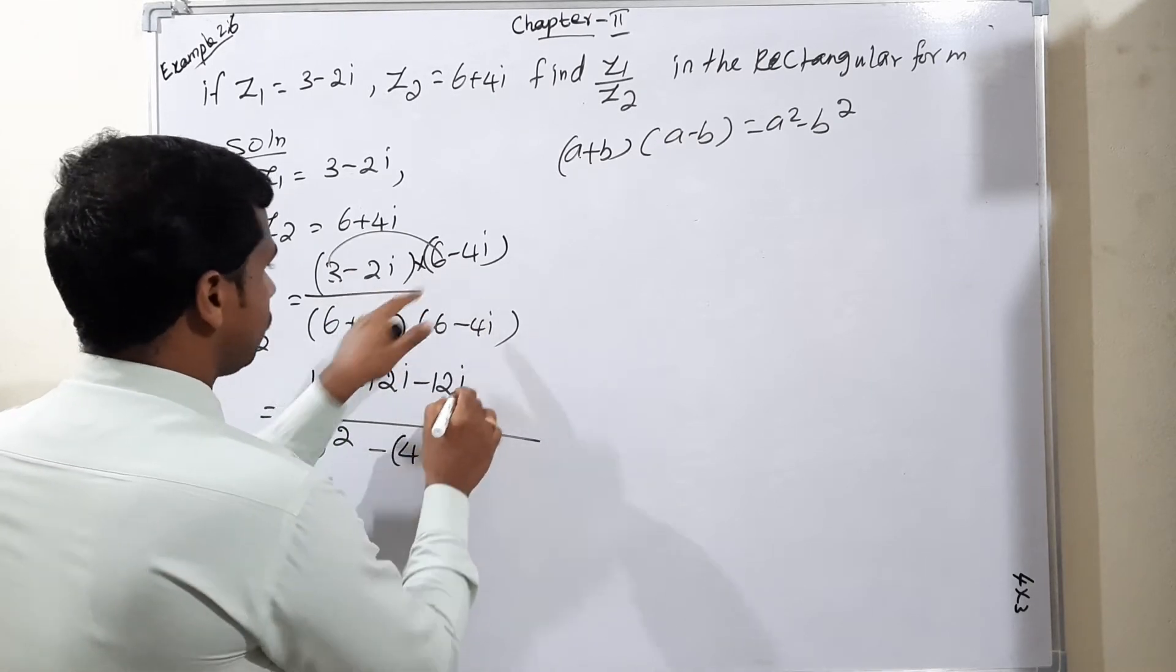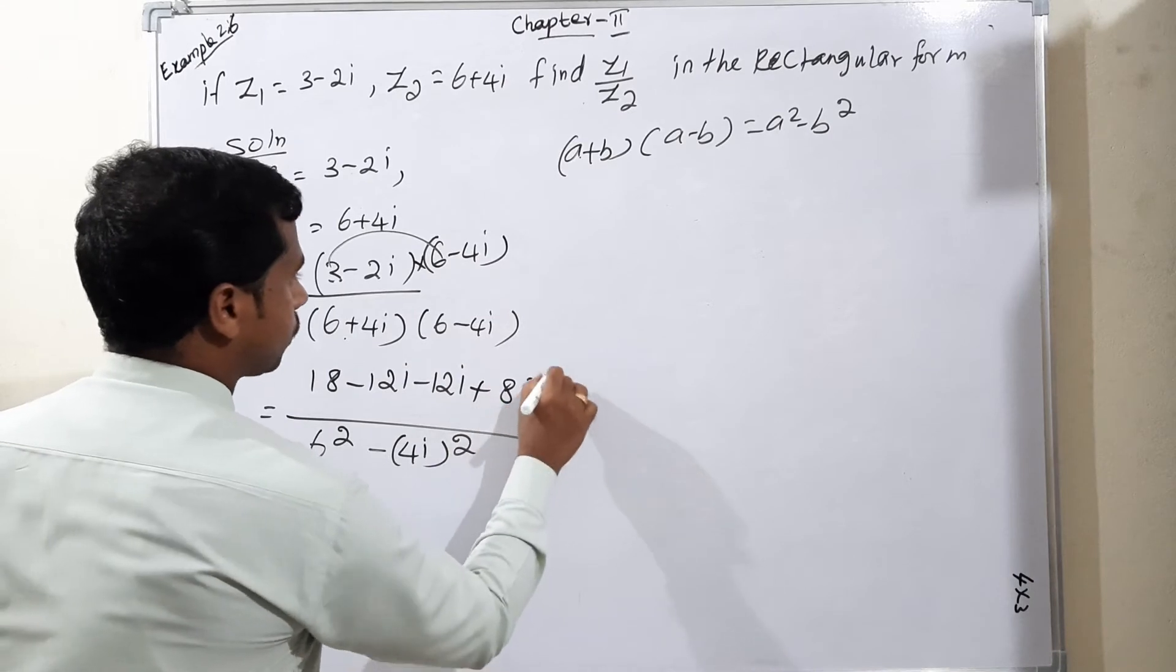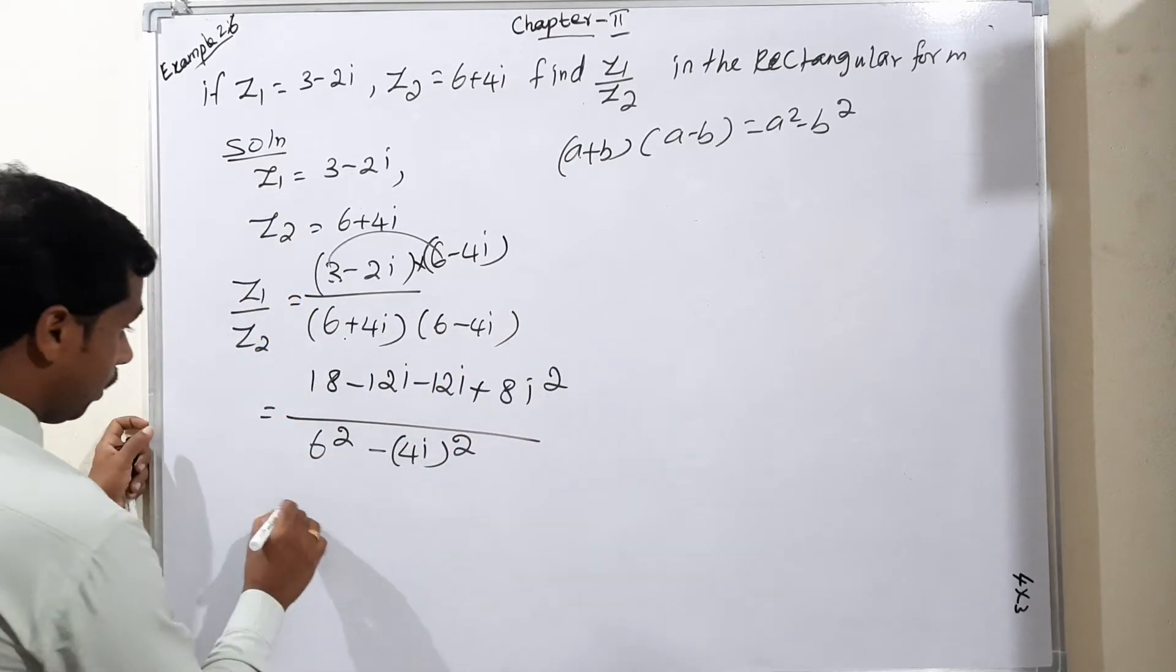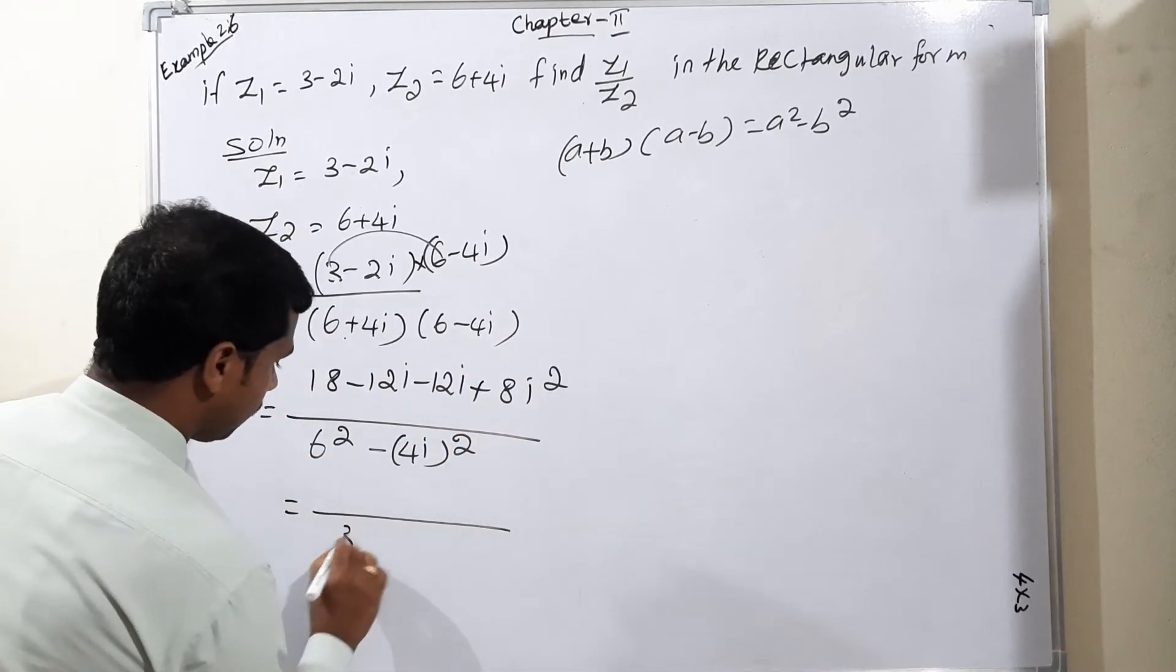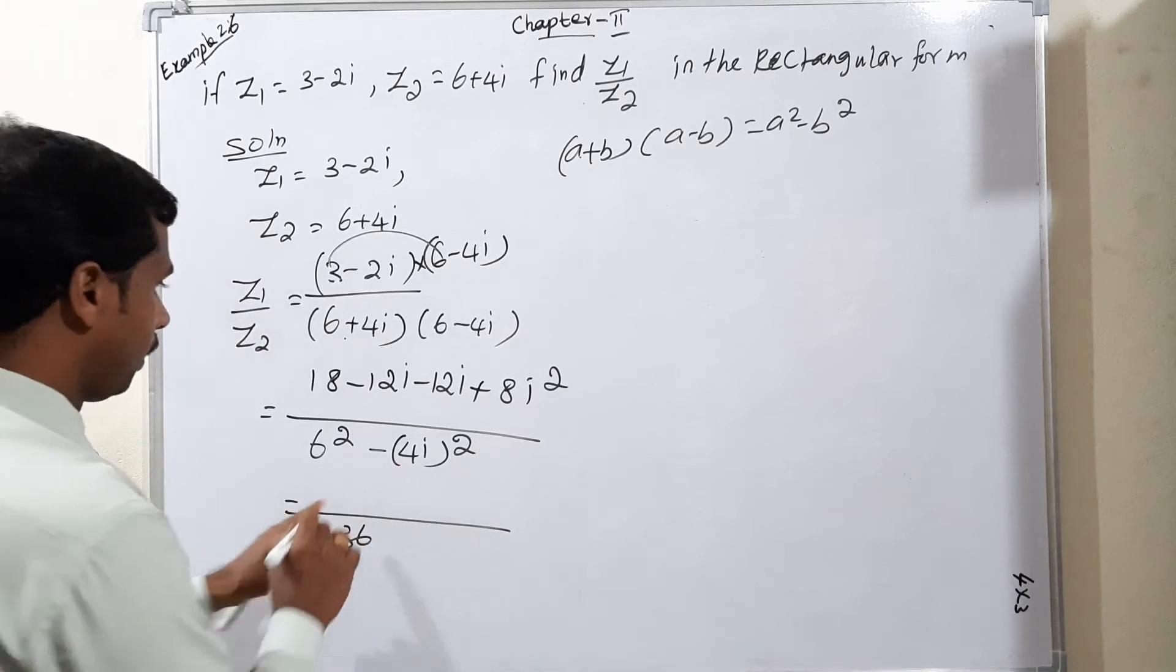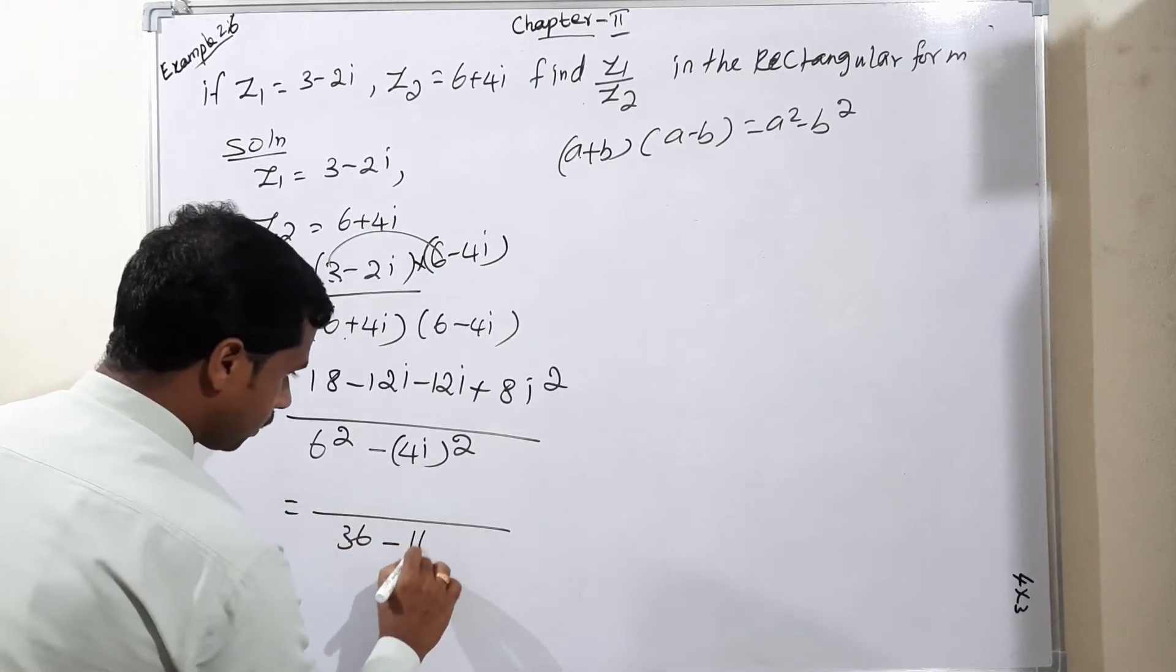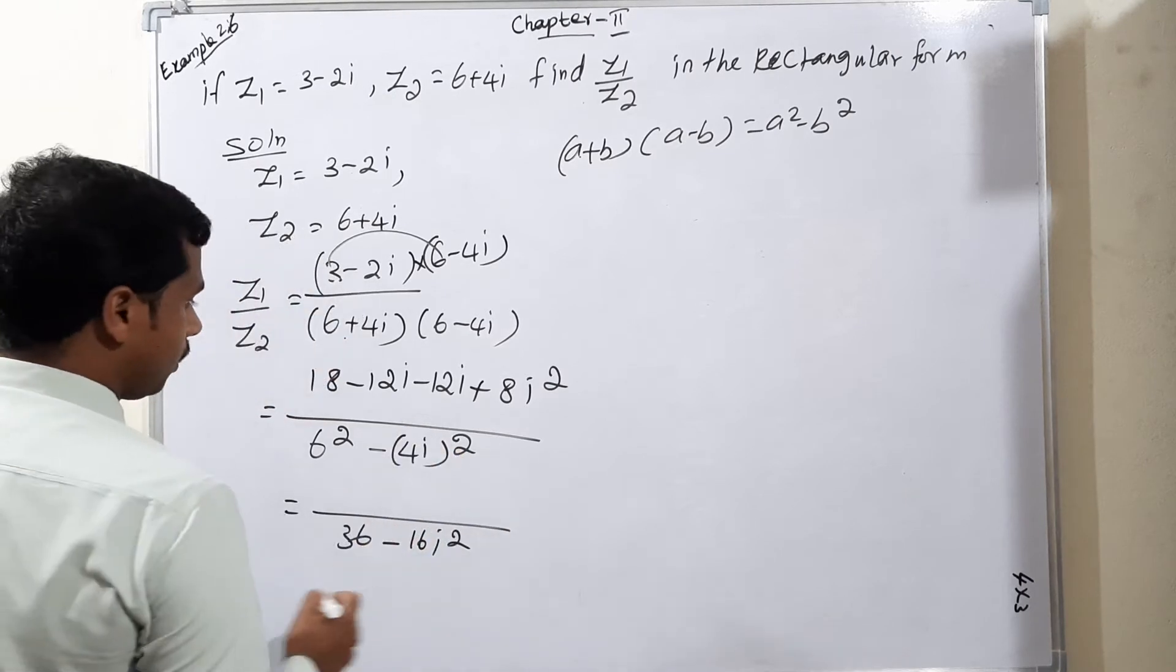So again minus into minus plus 2 into 4, 8i square. So 2 into 4, 8i square. Now denominator, 36 minus 4 square means 16i square.